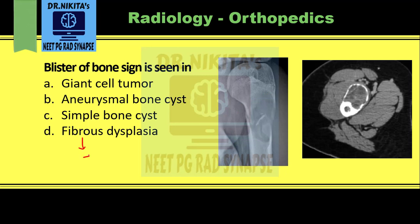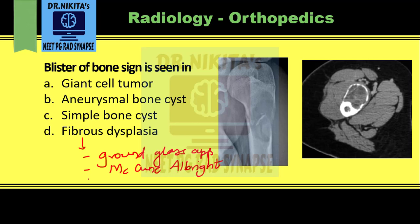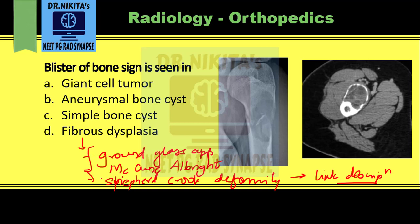Important points about fibrous dysplasia asked in exams: it has a ground glass appearance on imaging. The syndrome associated with it is McCune-Albright syndrome. It also has Shepherd's crook deformity. A detailed video on fibrous dysplasia has already been uploaded — link in the description below. Also watch the video on giant cell tumors and other epiphyseal lesions for differentiation.